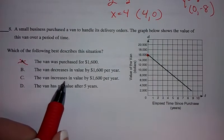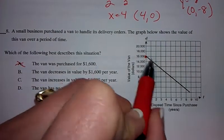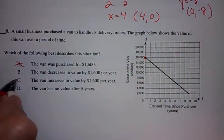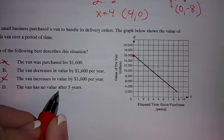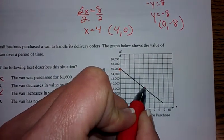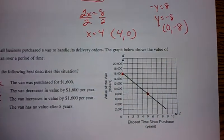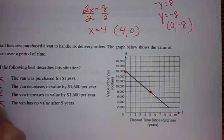While I go right here, the van increases in value. This is not increasing. It is going down. The van has no value after 5 years. Well, at 5 years, it has a value of $8,000. So, it's not that. It's letter B.